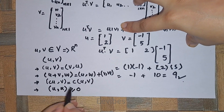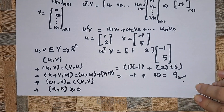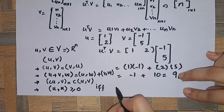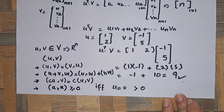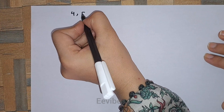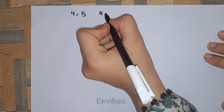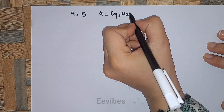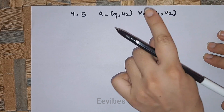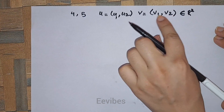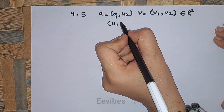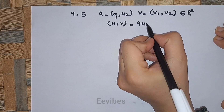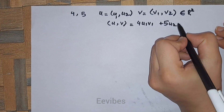The fourth and final axiom is the positive definite property: the dot product of a vector with itself is always 0 or positive — specifically, ⟨u, u⟩ = 0 if and only if u = 0, otherwise the result is always positive. Now let's do an example. For any two positive numbers, say 4 and 5, and two vectors u = (u1, u2) and v = (v1, v2) both belonging to ℝ², define the inner product function as 4·u1·v1 + 5·u2·v2.